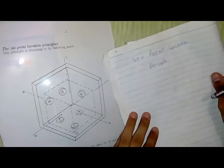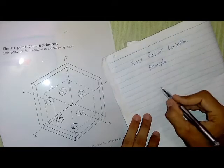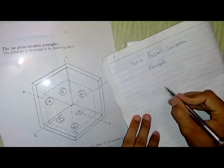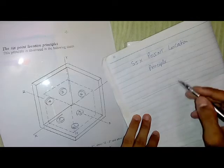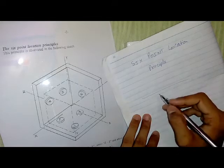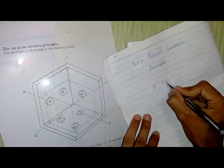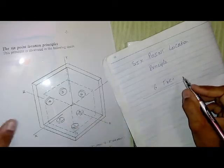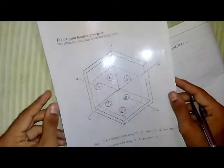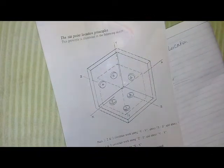We all know that every body has a tendency to rotate, to move right or left, or up or down. There are a total of six free directions for a body. To control and fix all those six free directions, we use the six-point locating principle.